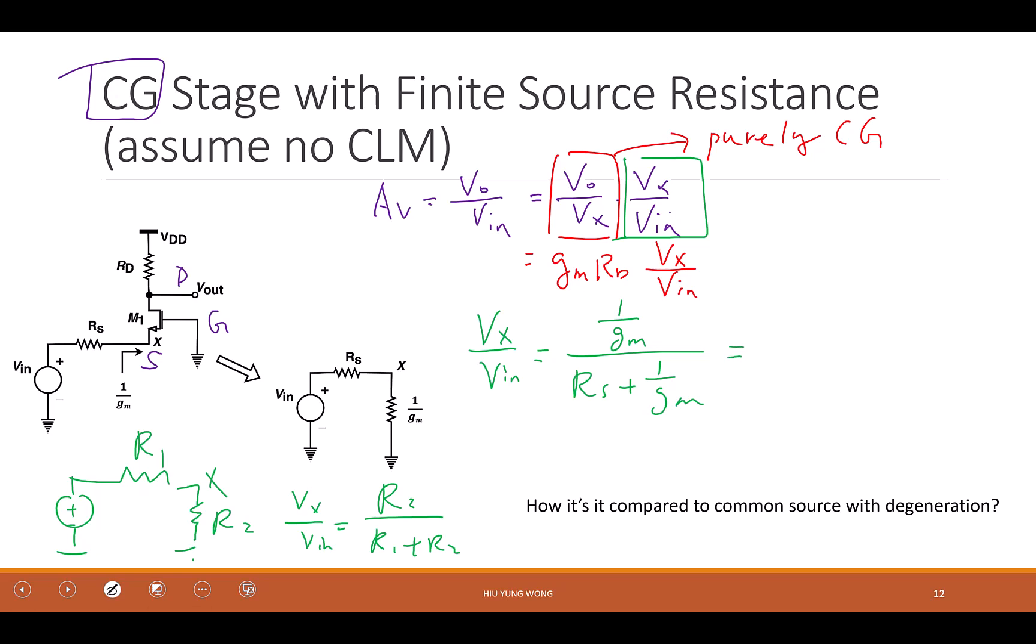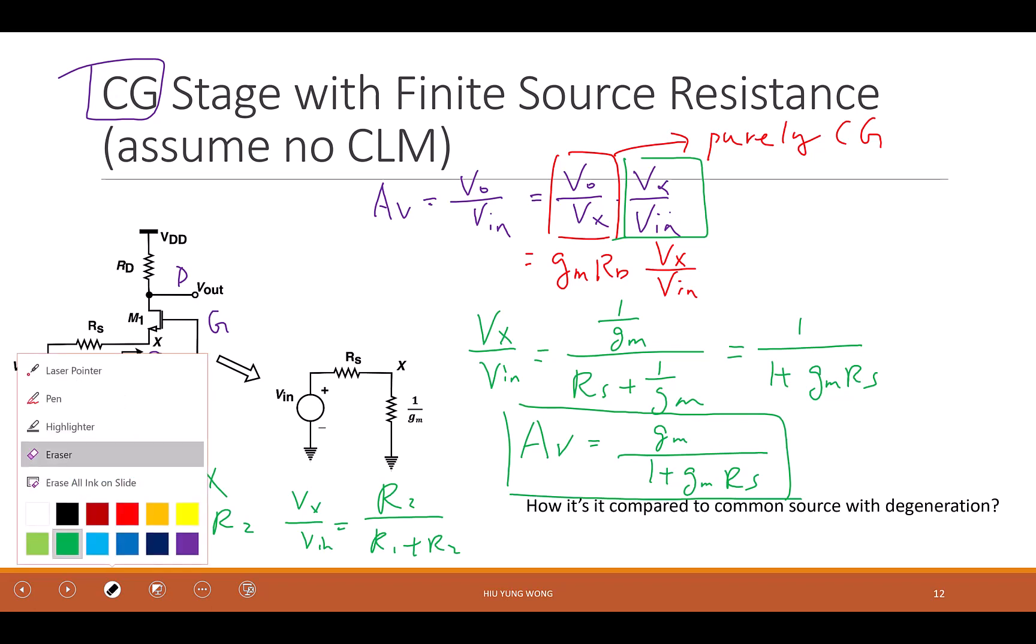And so this one give me 1 over 1 plus GMRs. So the total gain equals to GMRD divided by 1 plus GMRs. Source resistance coming from the voltage source. If you remember, this is very similar to the common source with degeneration, which kind of makes sense, because you have similar topology, except the input outputs are different.